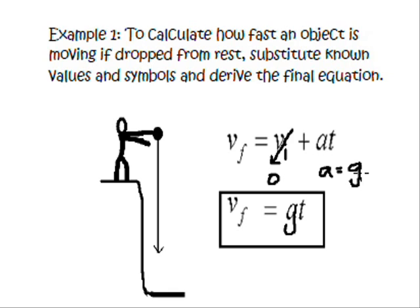On Earth, we know it's 9.8 meters per second squared, approximately. So if you want to calculate how fast the object is moving at any given time, your speed is just going to be equal to gravity times the length of time it has fallen.